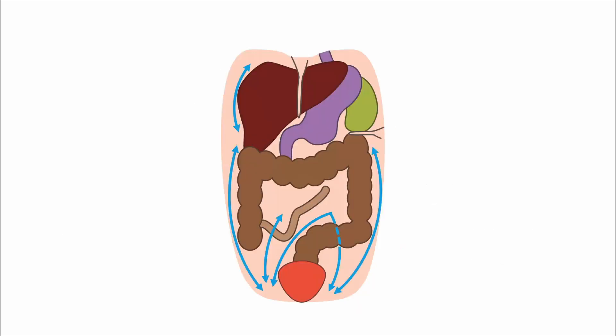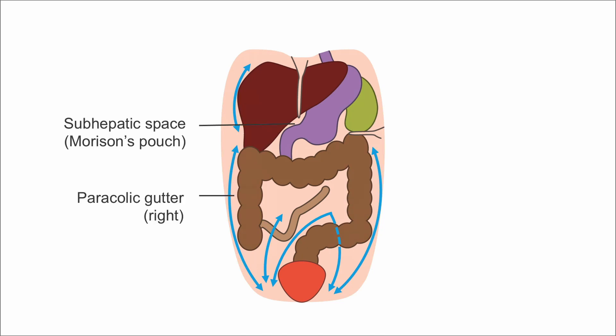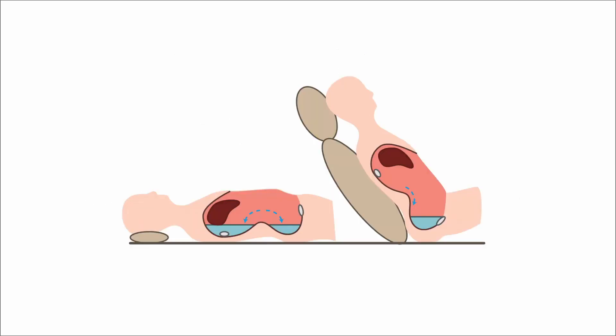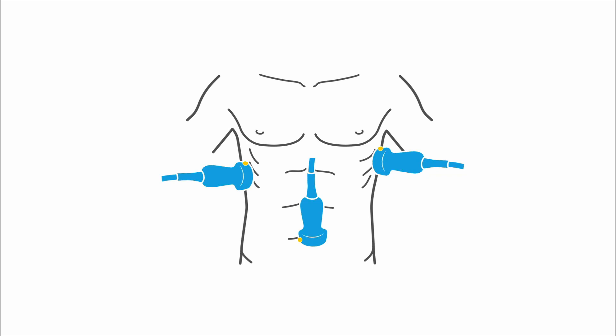Based on how fluid travels in the abdomen, the most likely place to find fluid is in the right upper quadrant and pelvis. Fluid ascends via the right pericolic gutter to Morrison's pouch and the right subphrenic space. The phrenocolic ligament restricts flow going up and to the left. I like to think of free fluid in the abdomen like puddles — it tends to collect in the divots and low spots. Let's review the conventional views of seeing free fluid in the abdomen.